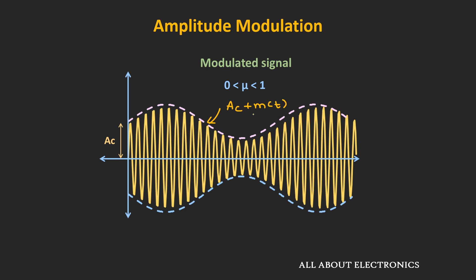For the envelope detector, the shape of this envelope is similar to the shape of the message signal. So if we can somehow recover this envelope of the AM signal, then we can recover the message signal. That is the idea behind the envelope detector.